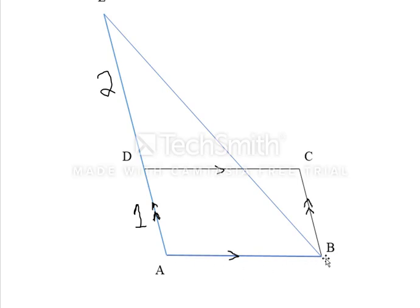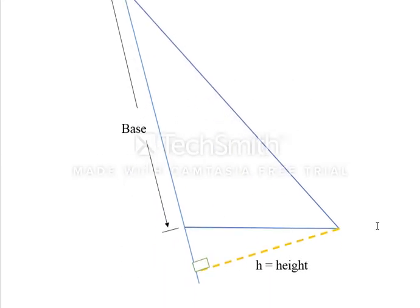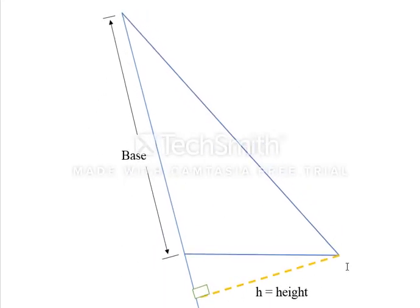I have taken this triangle out of the figure. To find the area of this obtuse angle triangle, if you take one side as the base, the height will be outside the triangle. Remember: in an obtuse angle triangle, when the base is the side linked with the obtuse angle, the height falls outside the triangle.